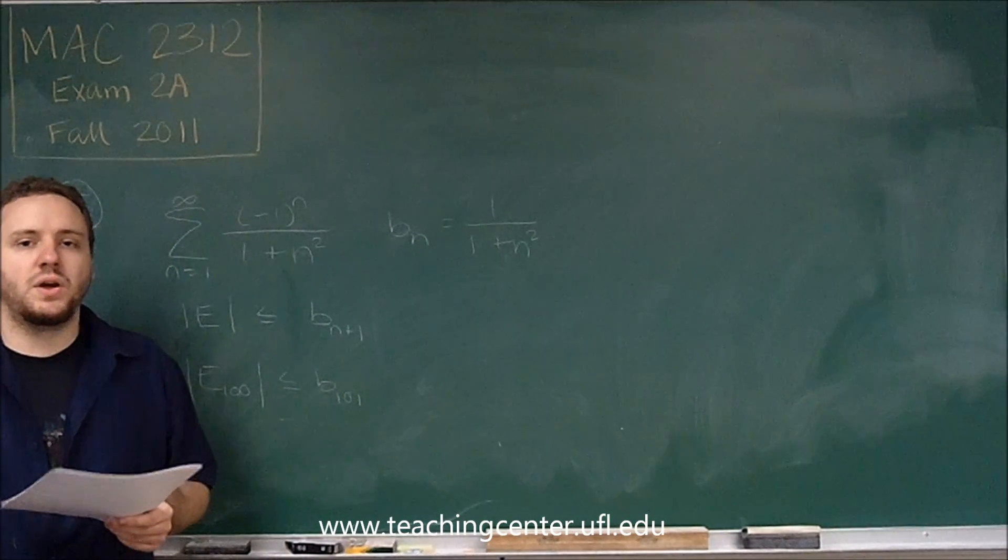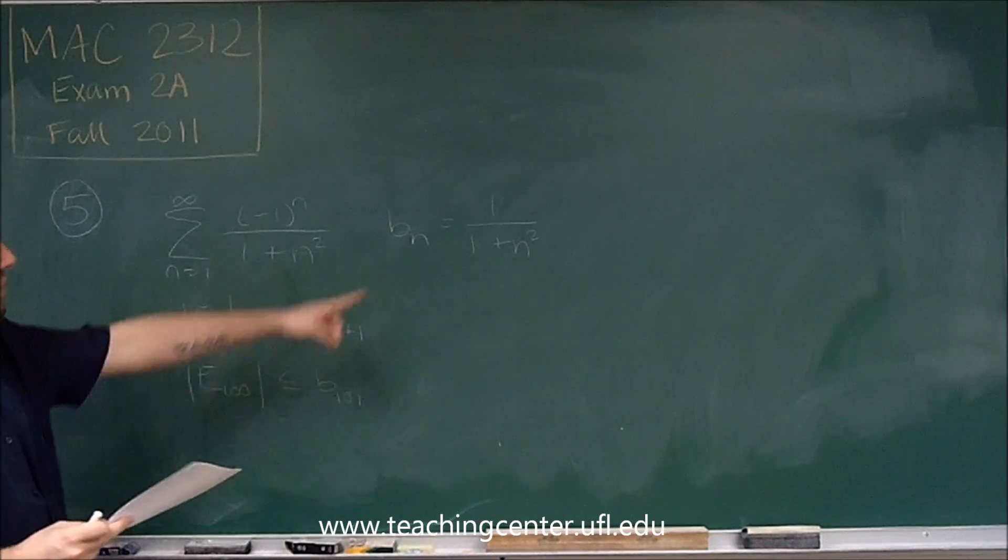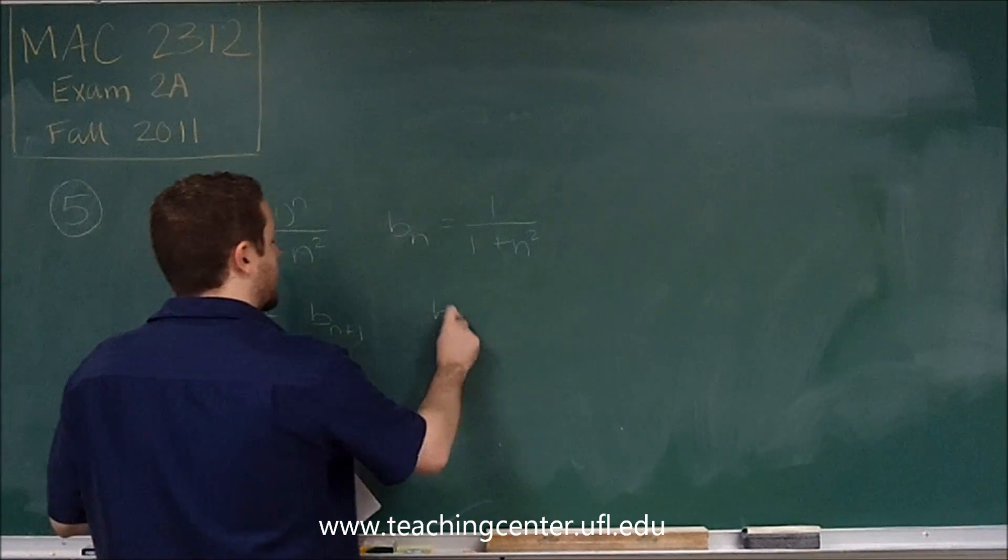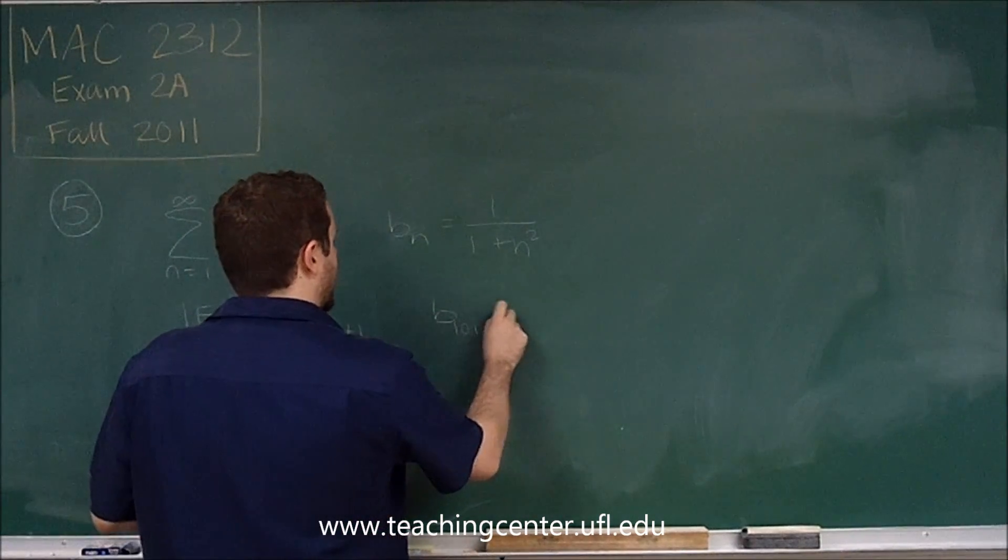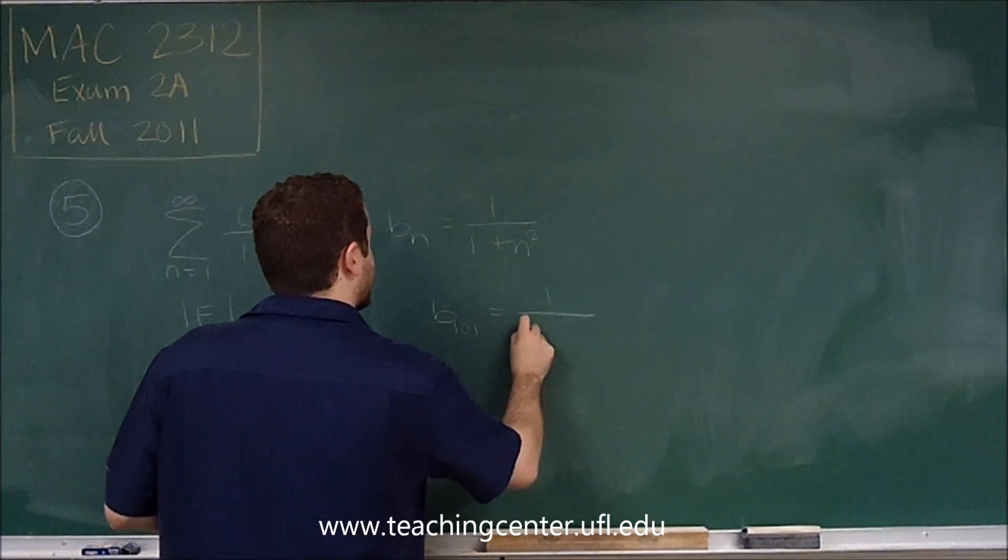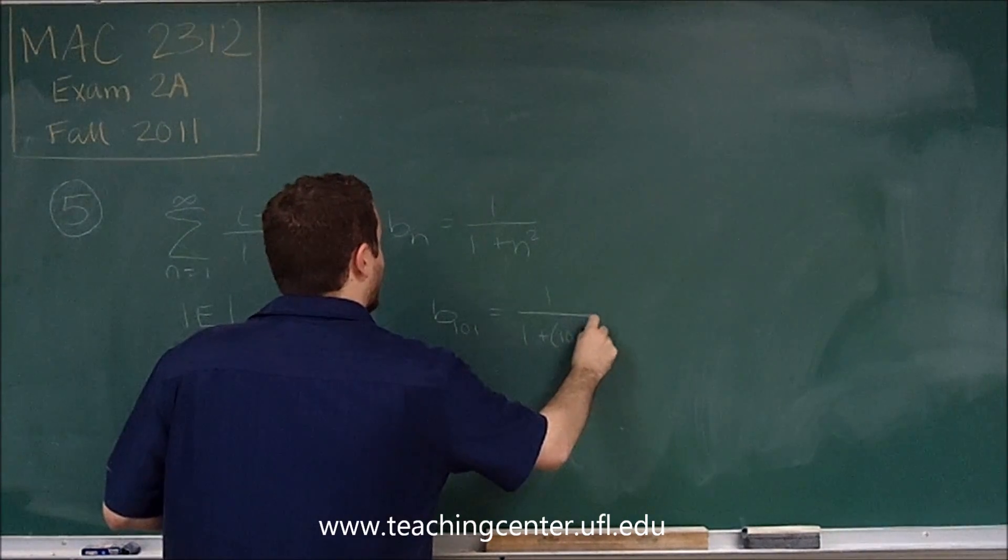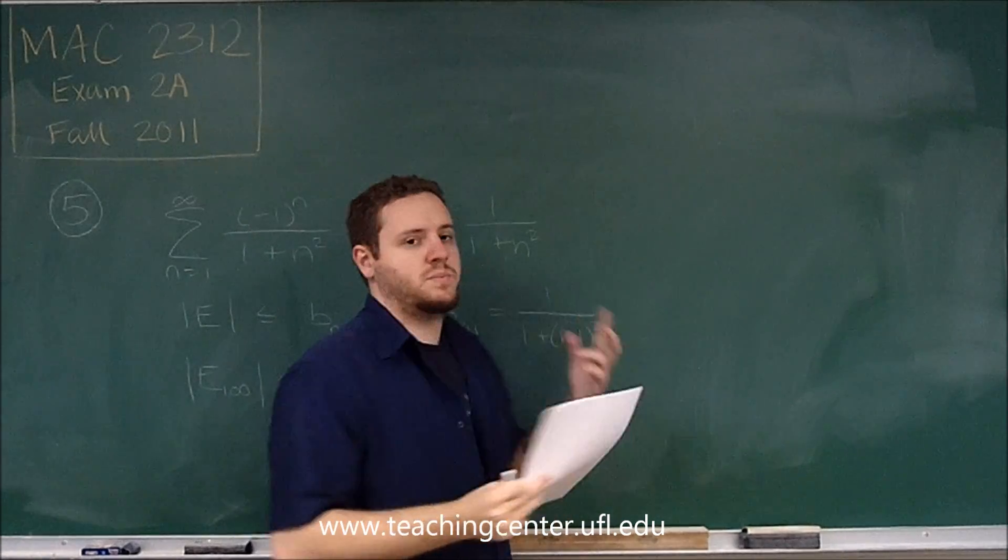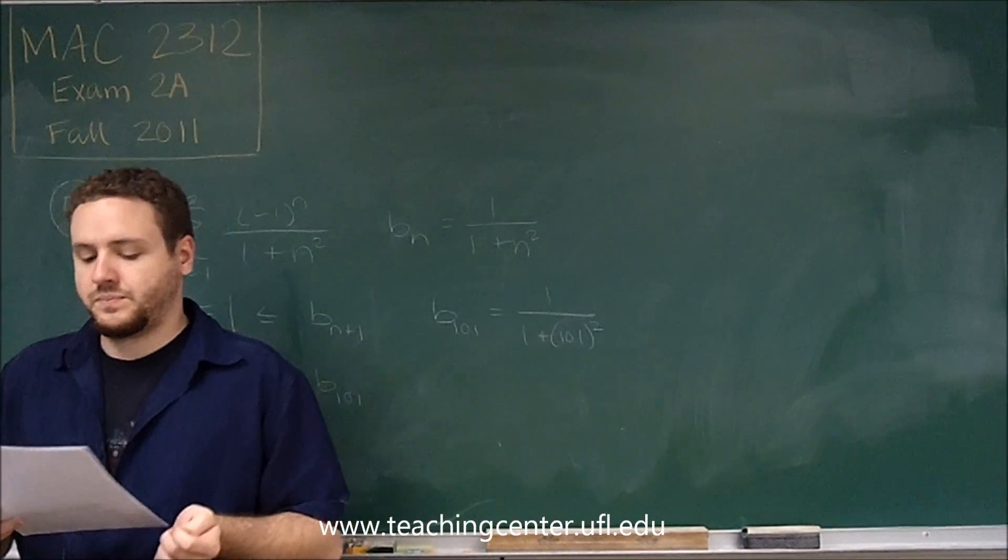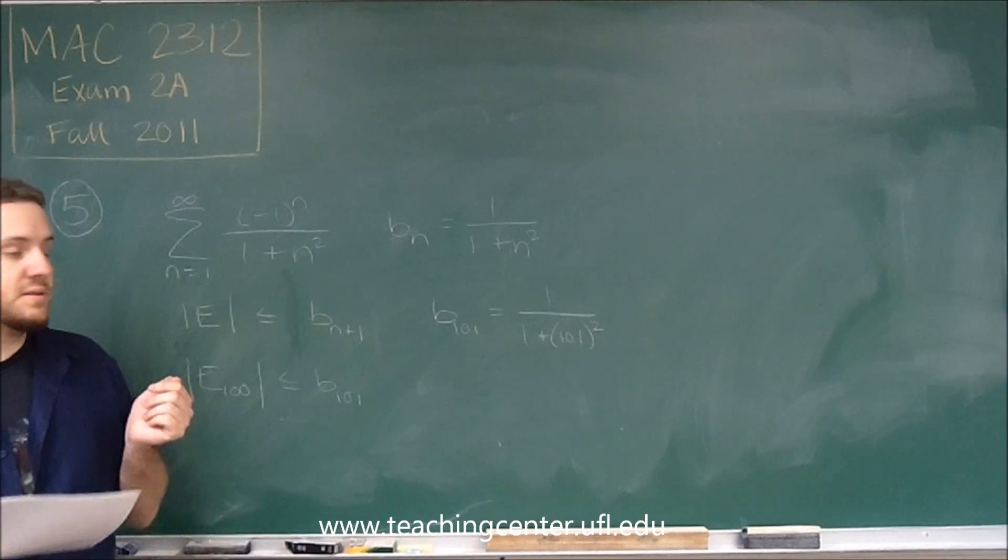We just need to figure out what the 101st term is. We can just plug in 101 and see what that is. So b_101 is 1 over 1 plus 101 squared, which of course you're not expected to write out there. And that's exactly one of the answers.